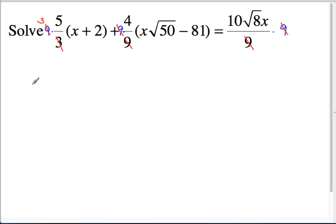So 15 bracket x plus 2, plus 4, times x root 50 minus 81, equal to 10 root 8. Okay, so we cleaned up the fractions. What's still kind of messy about this?